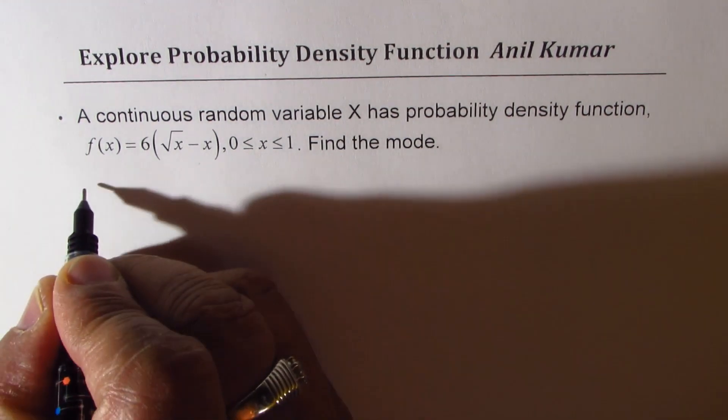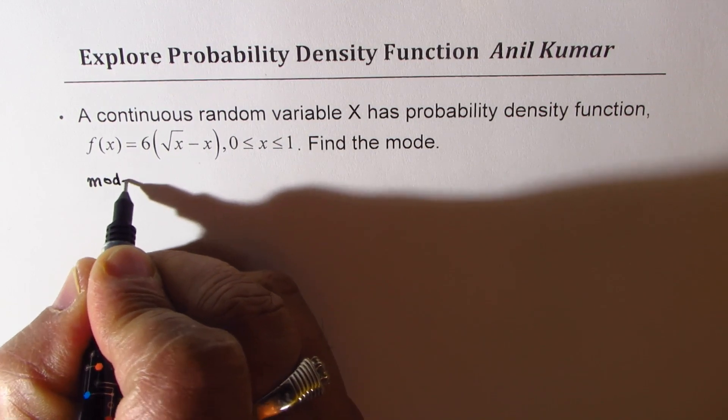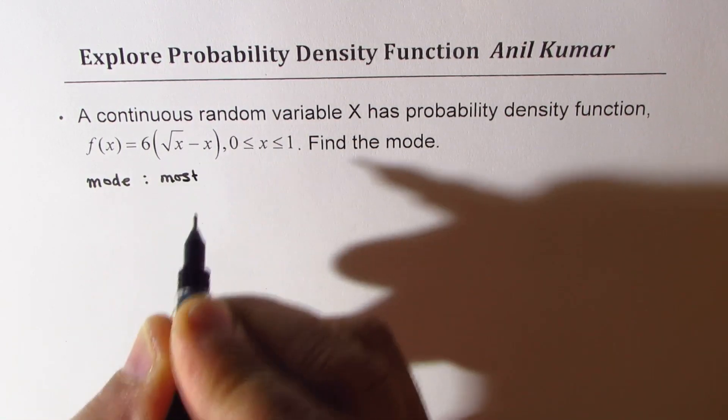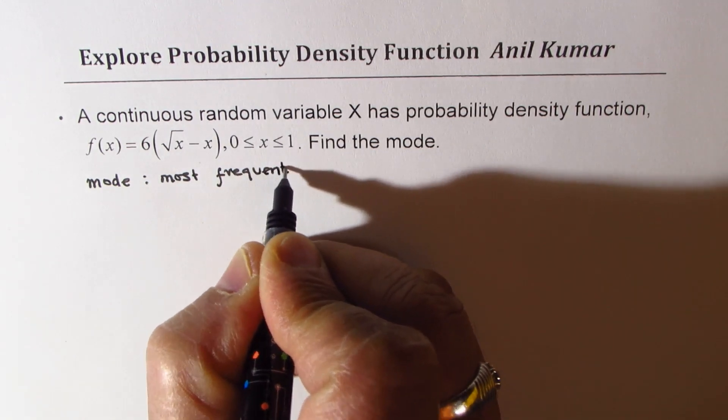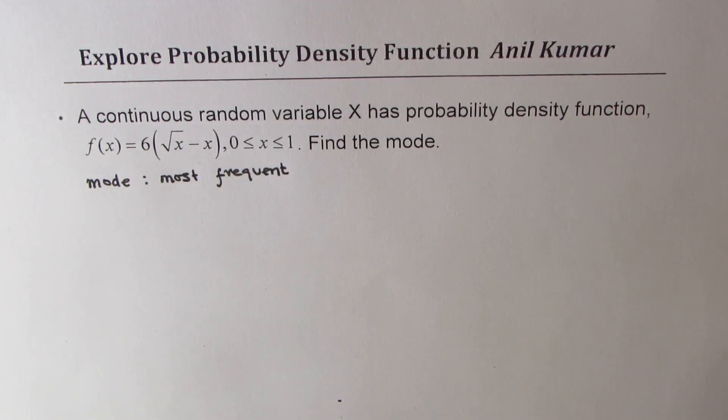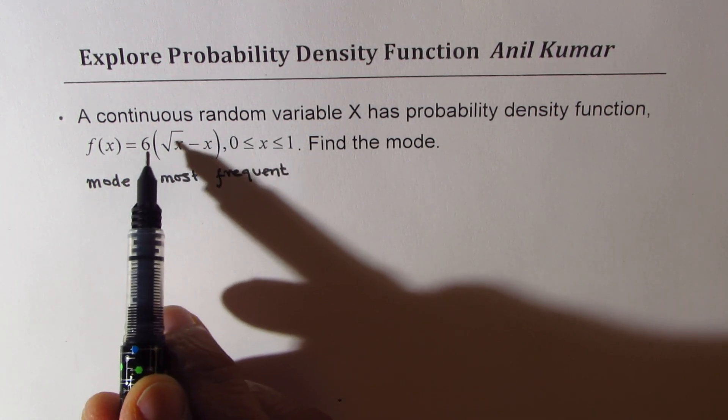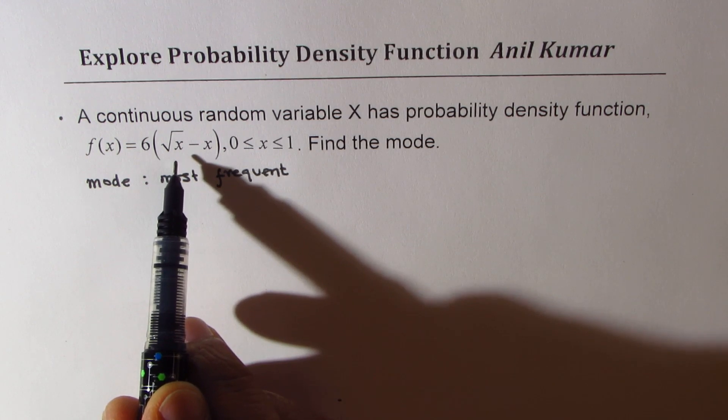Mode means most frequent. How do we find the most frequent value? In a continuous random variable x with probability density as given here, we could find the mode by differentiating this function and finding the value of x.